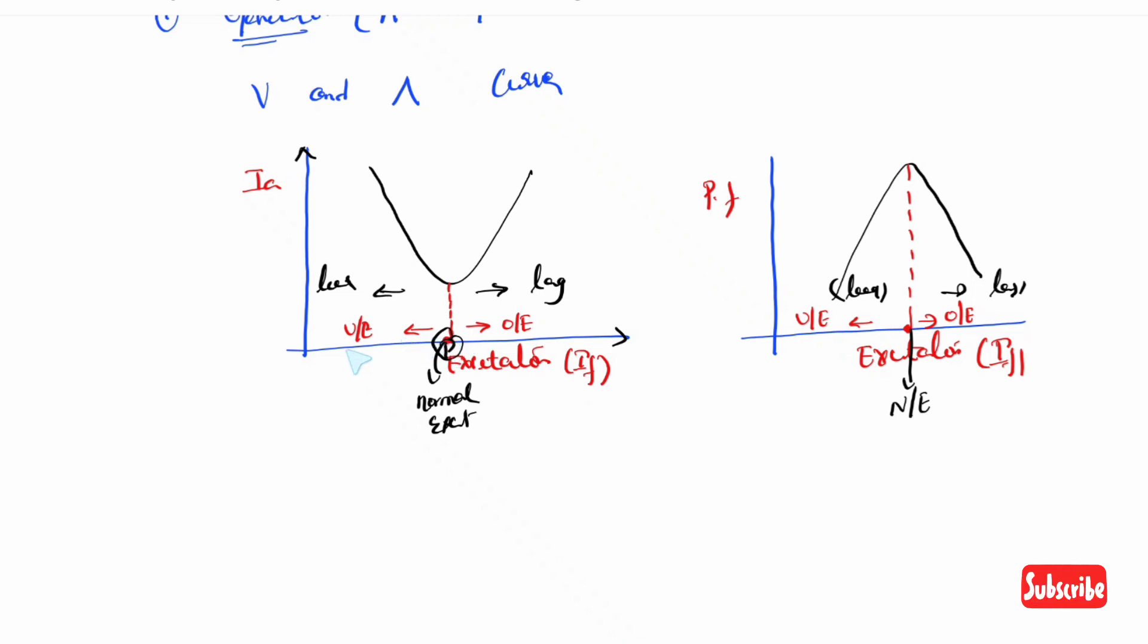When field current increases, we get leading operation. When field current decreases, we get lagging operation. This applies only to generators.